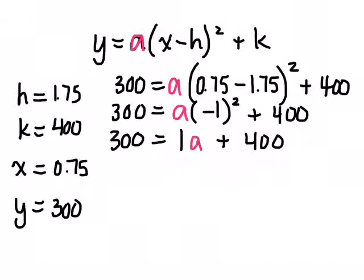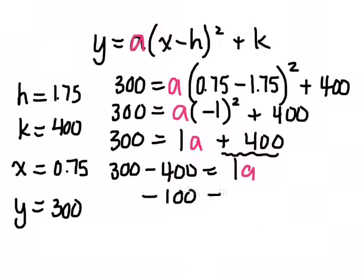Now what? I need to isolate a, so what should I do next? What's the next thing? Good. I want to get rid of this plus 400, so I'm taking it away. So it's 300 minus 400. That's where you should have had the negative. Equals 1a. What's 300 take away 400?